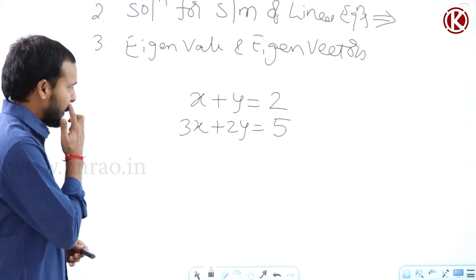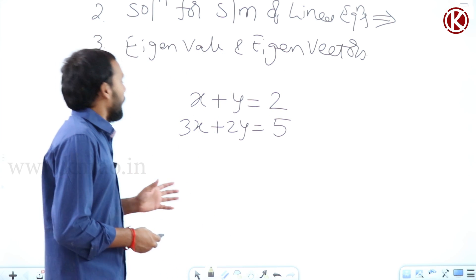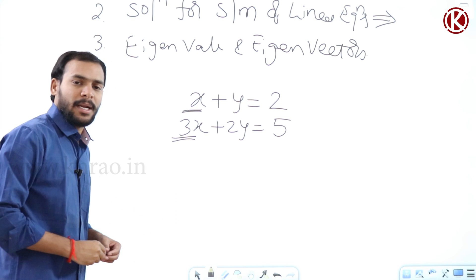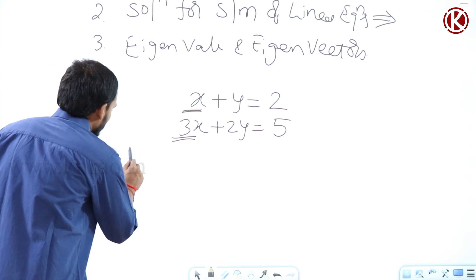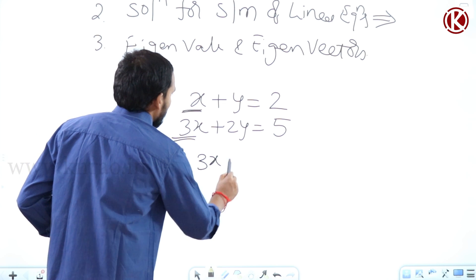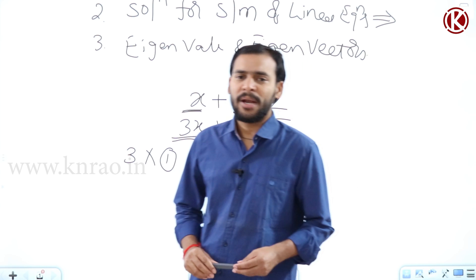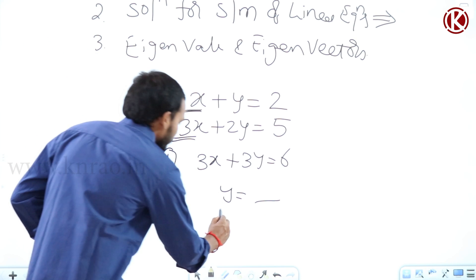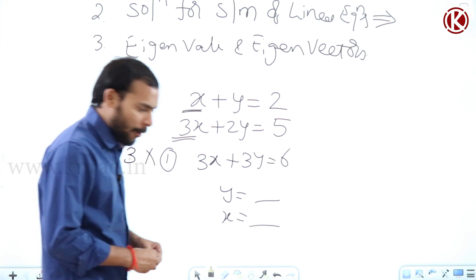Finding the solution means finding the values of x and y. If I give these equations to you, how will you proceed? Basically, we try to match the coefficients of x in both equations. To do that, we multiply the first equation by 3 to get 3x plus 3y equals 6, then perform addition and subtraction to find the value of y, and subsequently x.